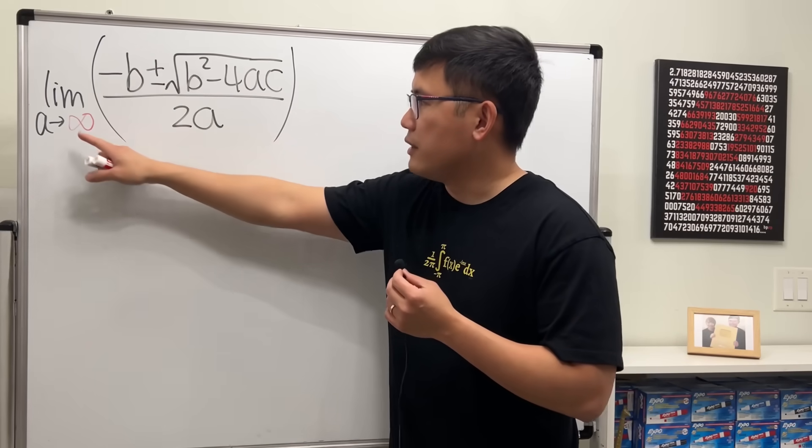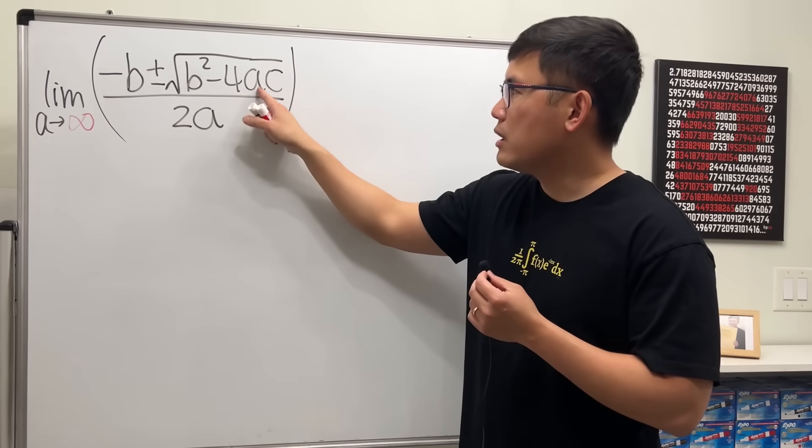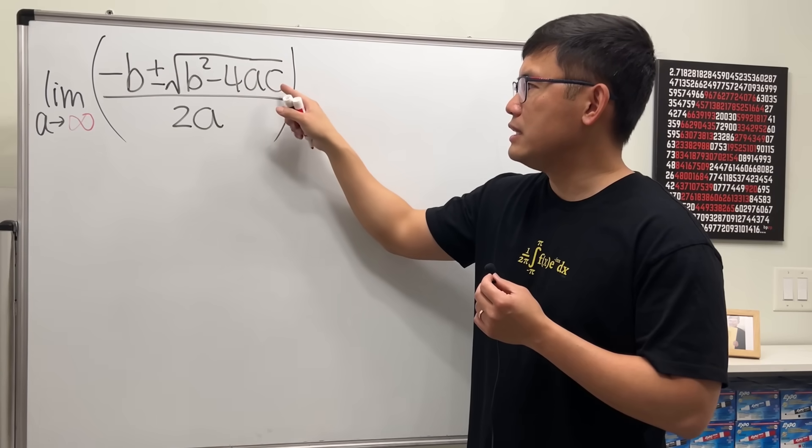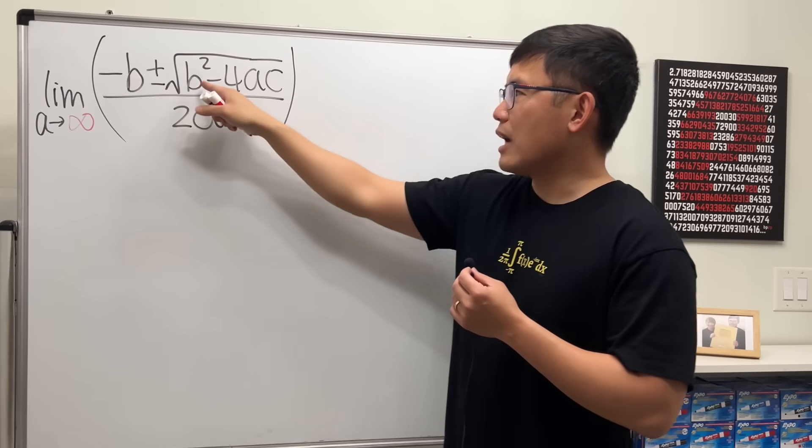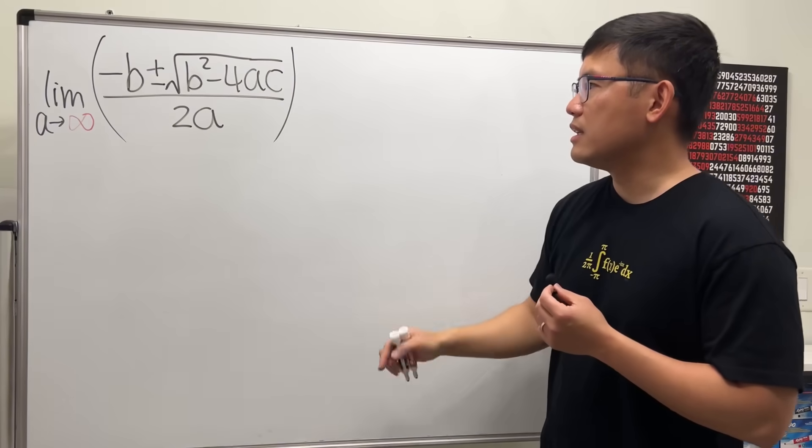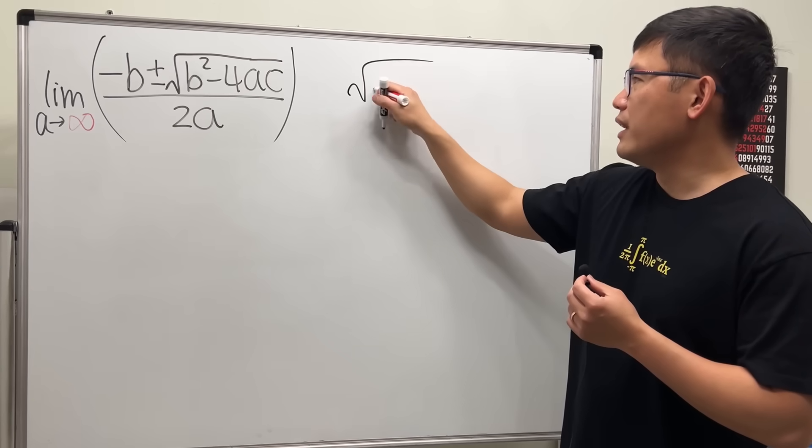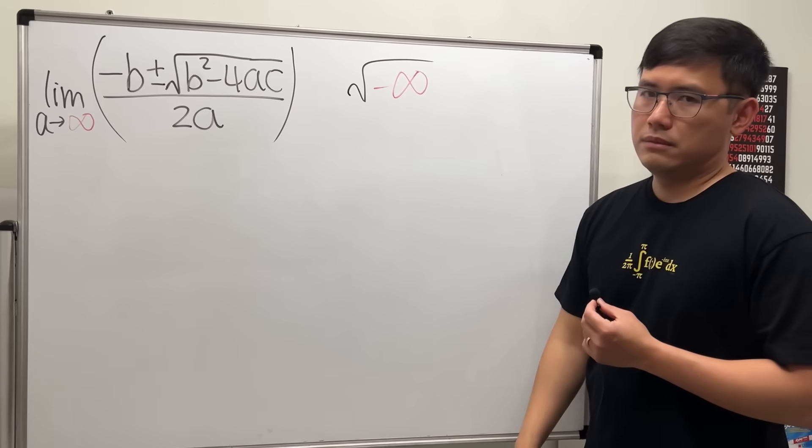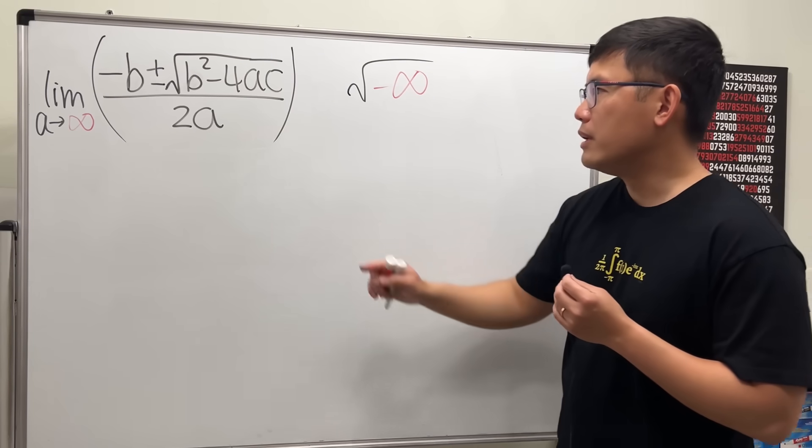If you just imagine putting infinity into this a right here, you will get -4 times infinity times c, and that's going to dominate the inside because b is just a constant. So we'll get like square root of negative infinity, and that's not real.